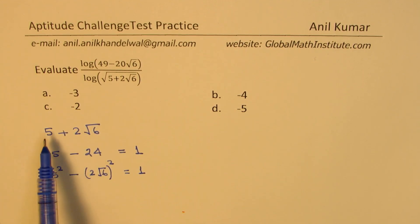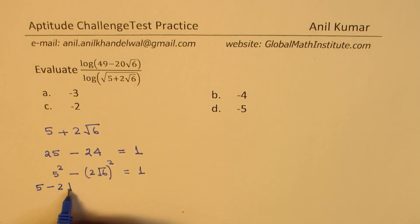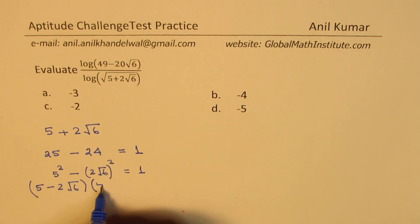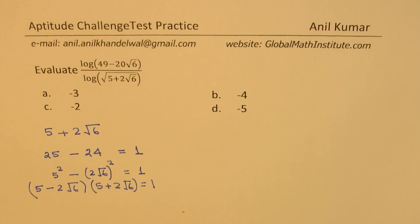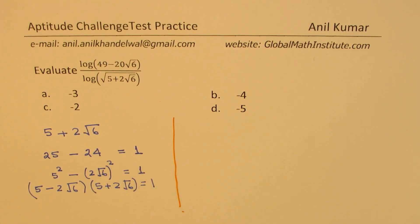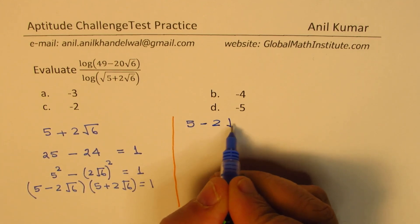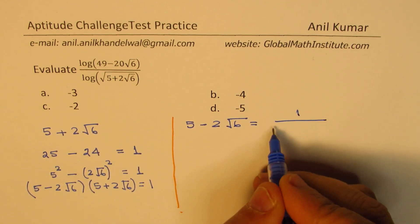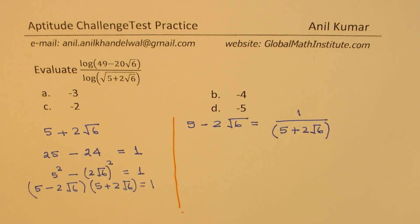If I could write them as squares of two numbers with difference 1, we could say that 5 squared minus 2 square root 6, whole squared, equals 1. That is like a squared minus b squared. We could always write this as (5 minus 2 square root 6)(5 plus 2 square root 6) equals 1. So we can write 5 minus 2 square root 6 as equal to 1 over 5 plus 2 square root 6. That is one thing which is going to help you evaluate the logarithm in this question.